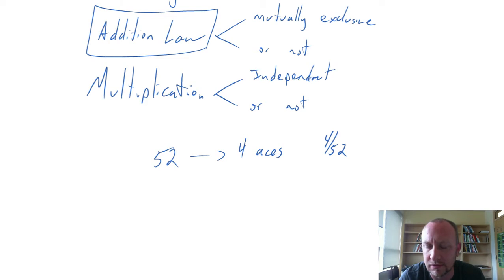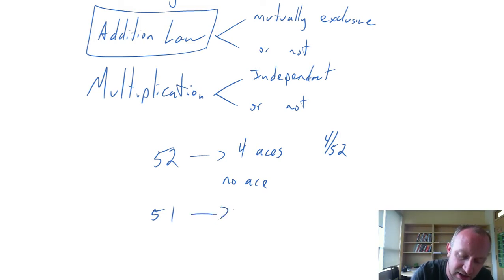How does that change the probability of getting an ace if I draw another card? Well, if I've taken one card out of that deck, now there's only 51 cards left, and maybe there's still 4 aces because I haven't drawn one yet. So the probability now of getting an ace is going to be 4 out of 51.